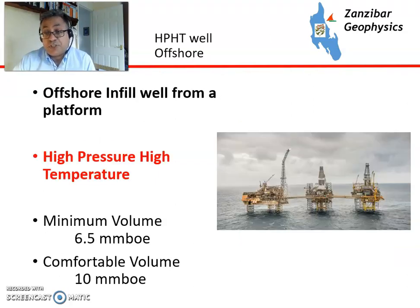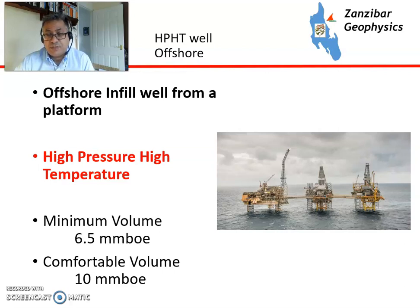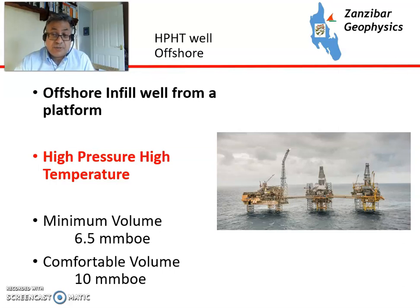Moving to high pressure, high temperature — where everything is much more expensive because of safety concerns. There's a picture of Elgin and Franklin, another project I worked on. Minimum volumes for an infill well in a high pressure, high temperature area would be about 6.5 to 7 million barrels of oil equivalent; you'd really want about 10 million barrels of oil equivalent to give you a safety margin. Complicated wells take a long time with a lot of complexity and more costs.